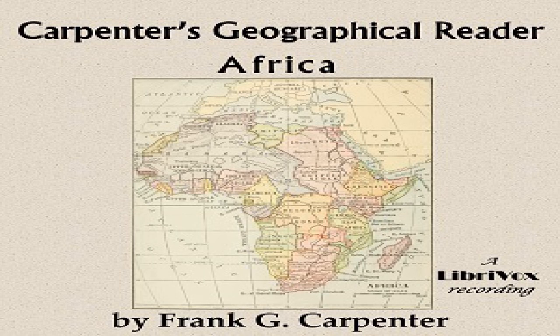Africa is, with the exception of Asia, the largest of the earth's grand divisions. It is three times the size of Europe, more than half again as large as South America, nearly one fourth larger than North America, and about three times as large as the United States including Alaska. Africa contains more than one fifth of all the land upon earth. Looking at the map, notice its simple formation — it has but few bays, no long peninsulas, and no arms of the sea running far into the land. It consists of a vast plateau of irregular shape with ranges of mountains about the edges, making the interior difficult of access from the sea.